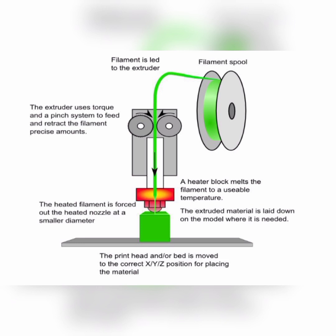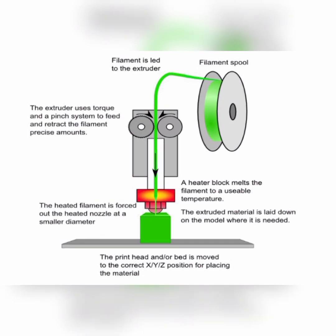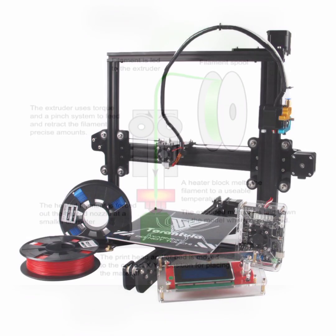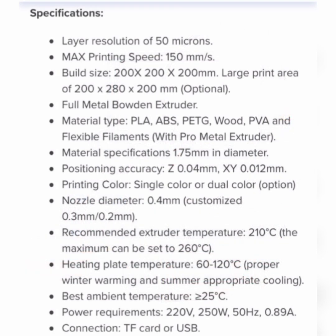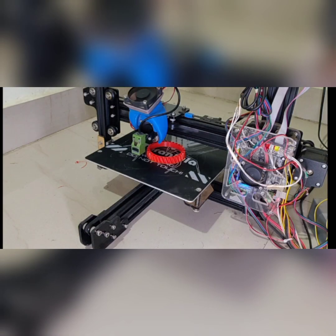The printhead is able to sense X, Y, and Z coordinates with respect to the bed using sensors mounted on it. Based on the CAD model shape uploaded, the printhead and bed will move to the correct X, Y, Z position to lay down the extruded material. The 3D printer model used to print the helical gear is shown on the screen, along with its specifications.